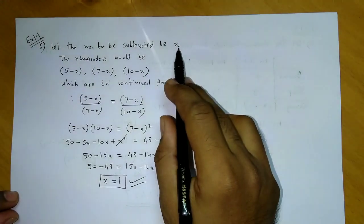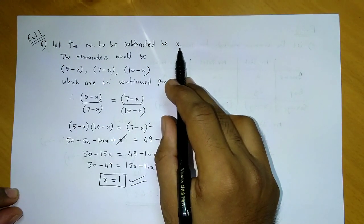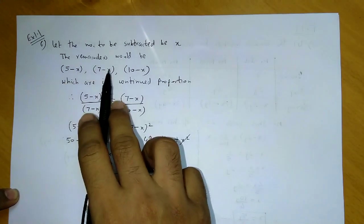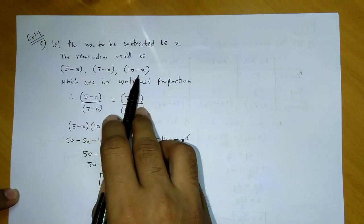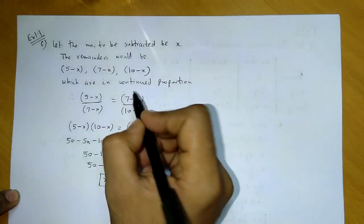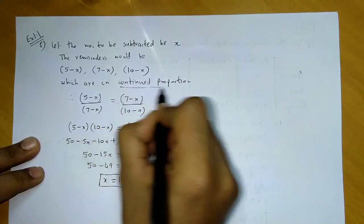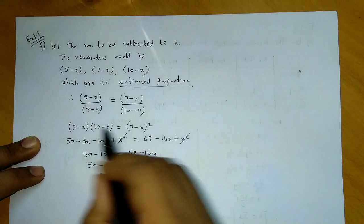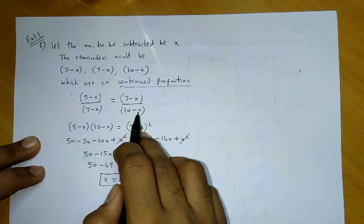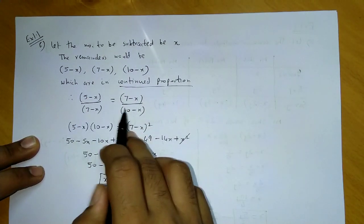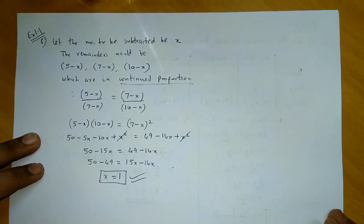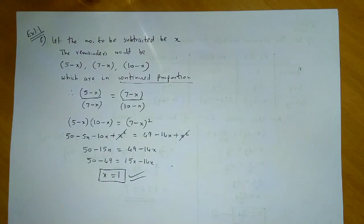To summarize: we take the number to be subtracted from 5, 7, and 10 as x. The remainders are 5 minus x, 7 minus x, and 10 minus x. These three remainders form a continued proportion, so A by B equals B by C. Cross multiplying and opening the brackets gives the required number as 1.